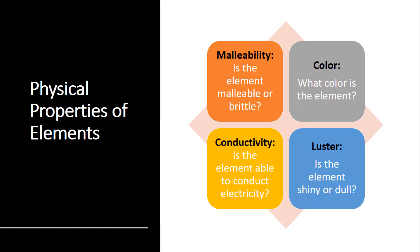After you determine the element's malleability, consider the element's color. This is an easy category to determine. Simply look at the element and write down what color it is. Is it yellow? Is it black? Is it silver? Is it brown? That's a pretty easy thing for you to do.